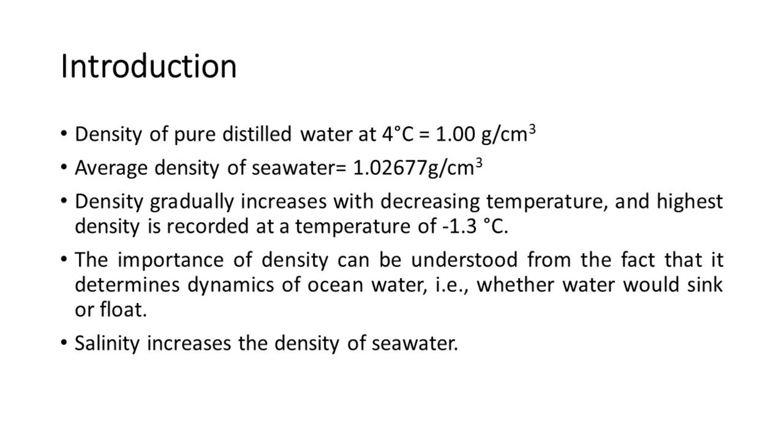So students, as you all know the density of pure distilled water at 4 degrees Celsius is 1 gram per centimeter cube or 1000 kilograms per meter cube. The density of seawater is 1.02677 grams per centimeter cube. That means it is slightly heavier than your pure water. What is important to mention here is that density plays a very important dynamic in ocean water because it determines the movement of water. Generally the lighter water would float over the heavier water.